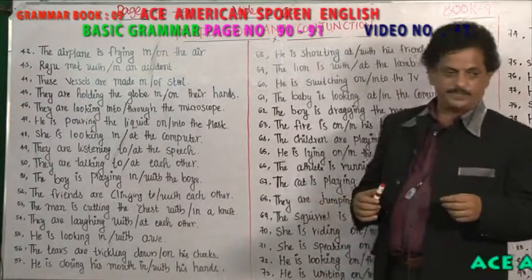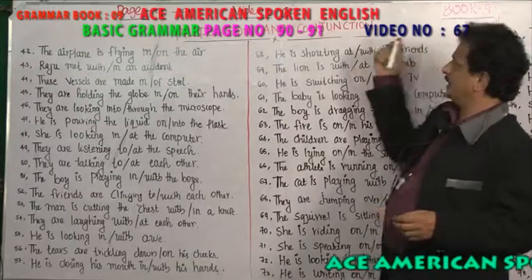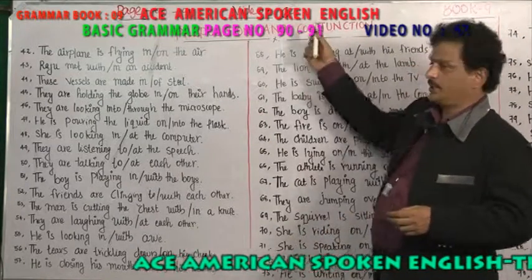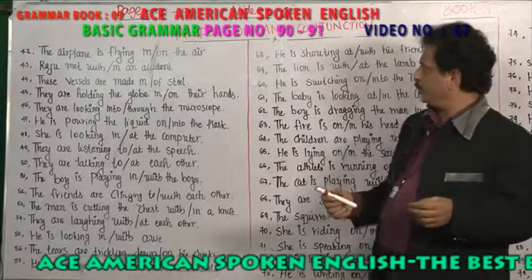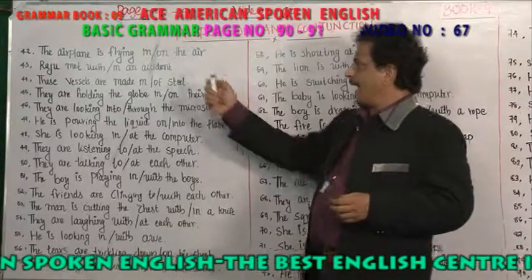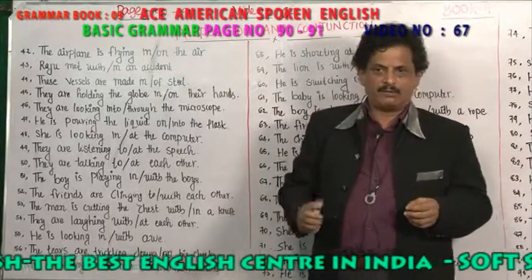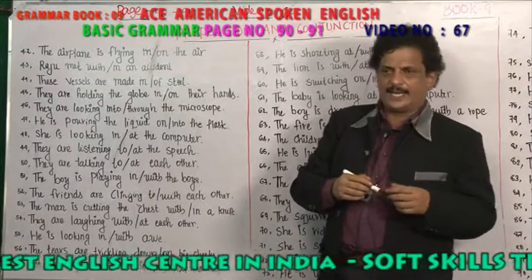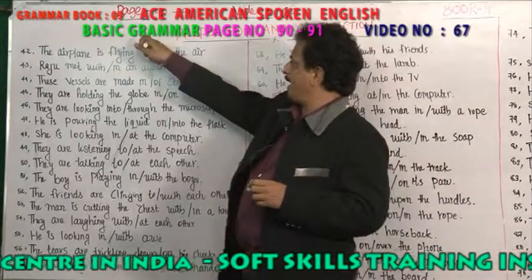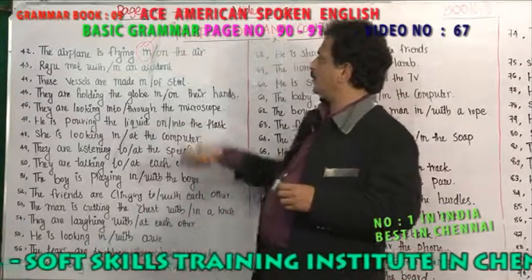Welcome to American English Center. Check your book number nine, page 199, video number 67: the preposition and conjunctions — the usage of prepositions. The airplane is flying in the air or on the air? The airplane is flying in the air. Why do you use 'in the air' and not 'on the air'?